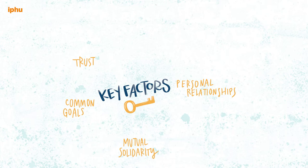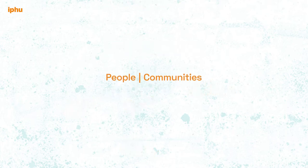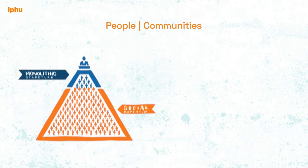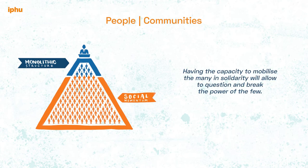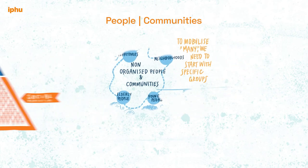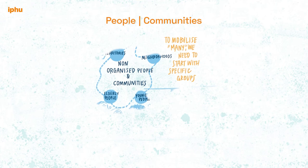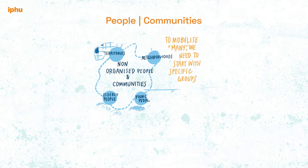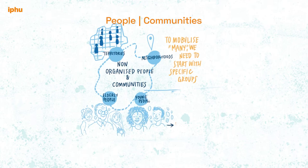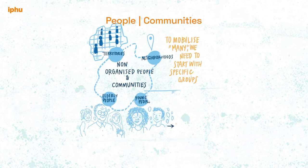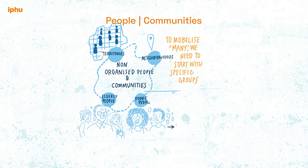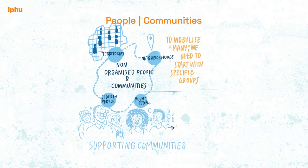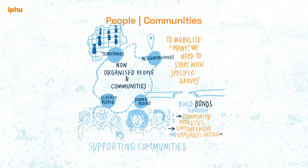Collective power is founded in the support of people and communities to our cause. Having the capacity to mobilize the many in solidarity will allow us to question and break the power of the few. In order to mobilize the many, we need to start with specific groups — building community step by step, building movement with those directly affected by the policies, with those in communities more in tune with us: neighborhoods, professional fields, age, orientations, and so on. We need to identify groups, and start drawing the possibility of supporting communities through community processes, empowerment, and grassroots action.